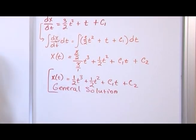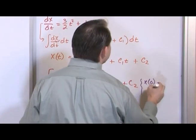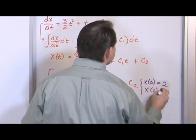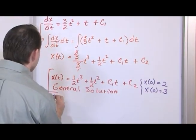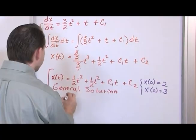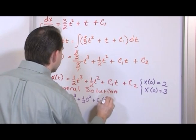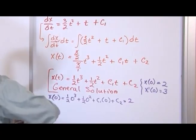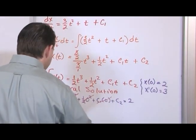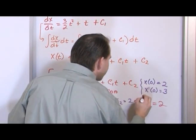Now let's apply the initial conditions. At time equals 0, the position equals 2, and at time equals 0, the velocity equals 3. Since we already have x of t, let's work with the first initial condition. x of 0 equals 1 half times 0 cubed plus 1 half times 0 squared plus c₁ times 0 plus c₂, and this equals 2. All the terms with t go away, and so c₂ equals 2. We've solved for one of the constants.